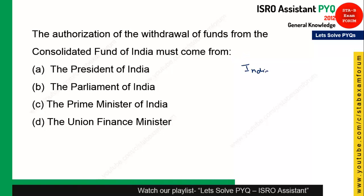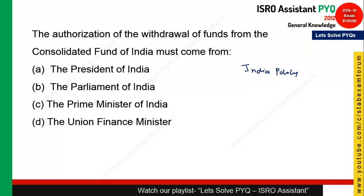The next question is from Indian polity. The authorization of withdrawal of funds from the Consolidated Fund of India must come from Parliament, because discussions generally happen in Parliament. Option B is the correct answer.